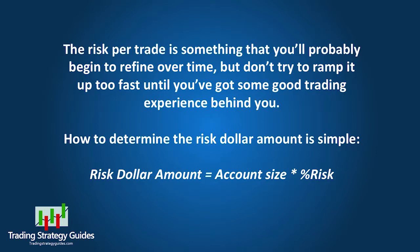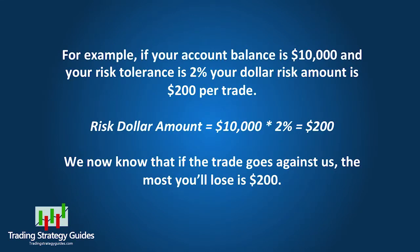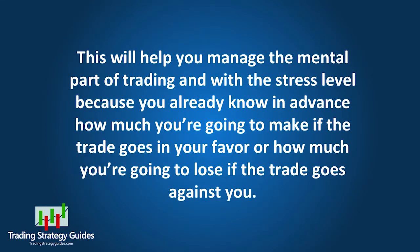How to determine the risk dollar amount is simple: Risk Dollar Amount equals Account Size times Percentage Risk. For example, if your account balance is $10,000 and your risk tolerance is 2%, your dollar risk amount is $200 per trade. Risk amount equals $10,000 times 2%, equals $200. We now know that if the trade goes against us, the most you'll lose is $200. This will help you manage the mental part of trading and stress levels, because you already know in advance how much you're going to make or lose.